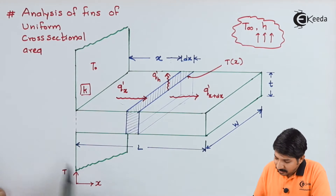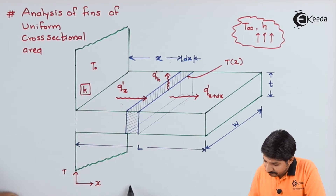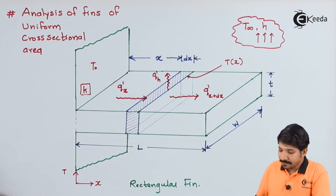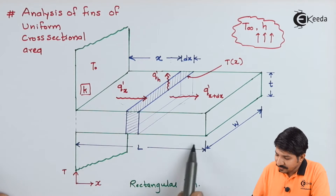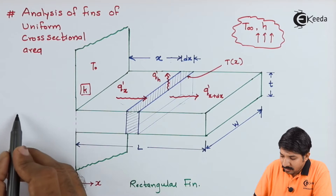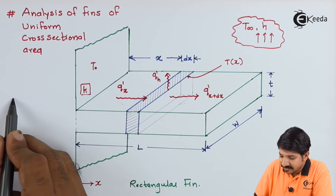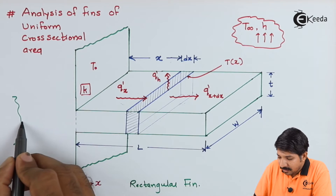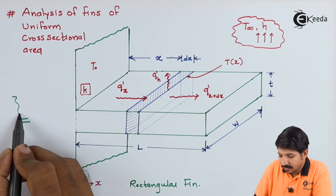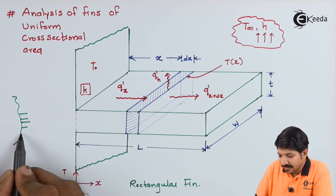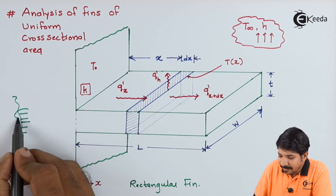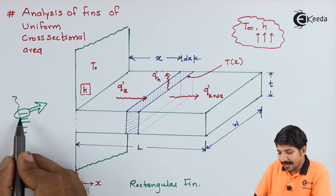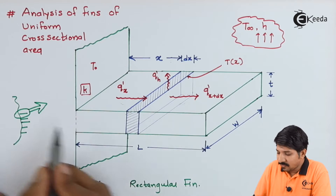Let us consider a rectangular fin. This is a bigger surface, and on to the bigger surface there are small fins. We have considered a small one-elemental fin and tried to zoom the same. That small elemental fin is what I have zoomed over here.